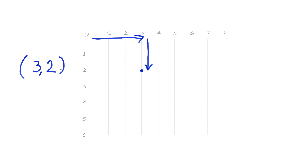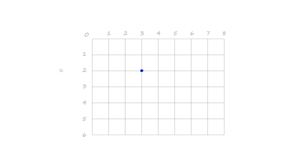Coordinates aren't very different from what you might already be used to. On a map you have how far east and how far north. You might be used to playing chess - the chess board has a way of describing which square you mean, so e4 is somewhere in the middle of the board. There are many examples of using two numbers to describe where we mean.